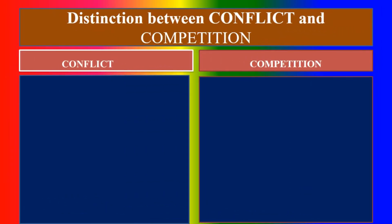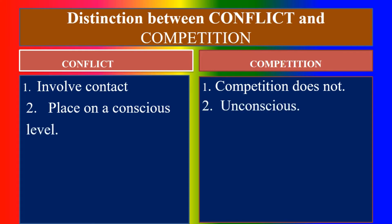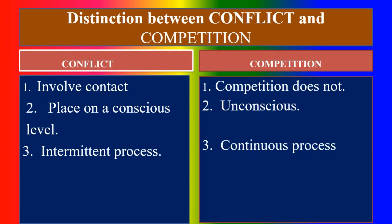Difference between conflict and competition: First, conflict involves contact but competition does not. Second, conflict plays on consciousness but competition is unconscious. Third, conflict is an intermittent process but competition is a continuous process. Fourth, conflict is personalized but competition is impersonal.